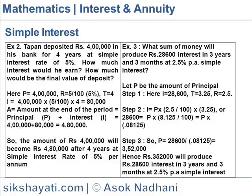What sum of money will produce Rs.28,600 interest in 3 years and 3 months at 2.5% per annum Simple Interest? Let P be the principal amount. Step 1: I = 28,600, T = 3.25 (that is, 3 years 3 months).